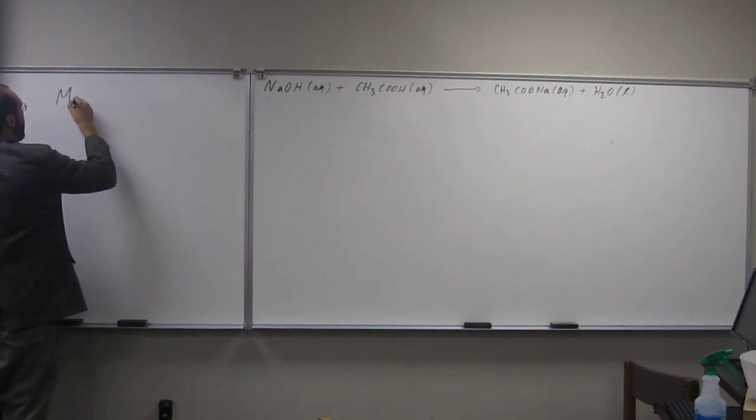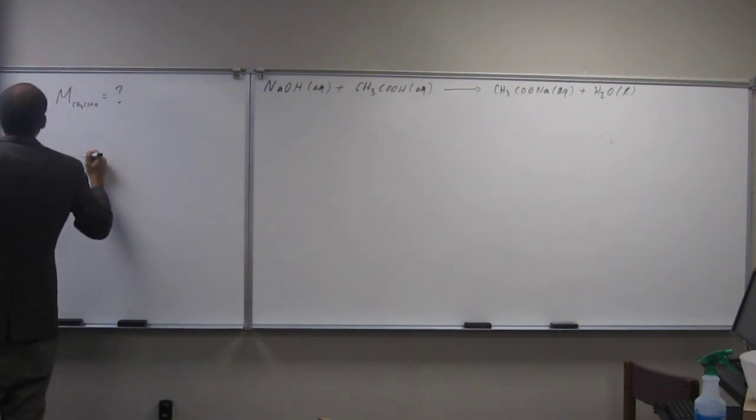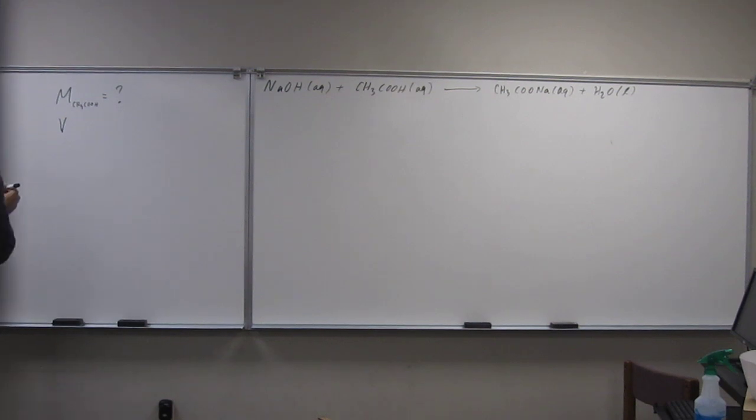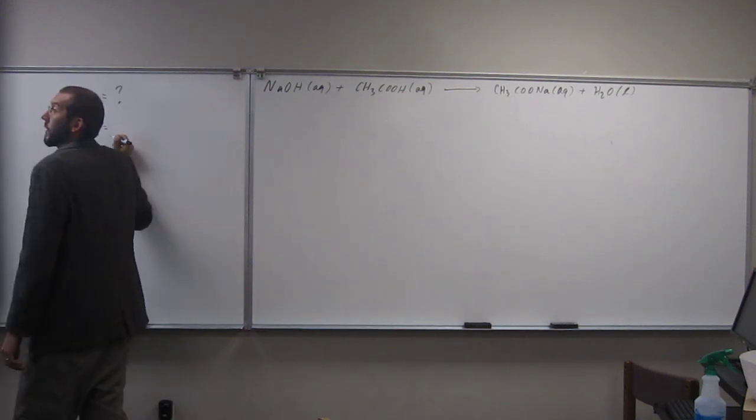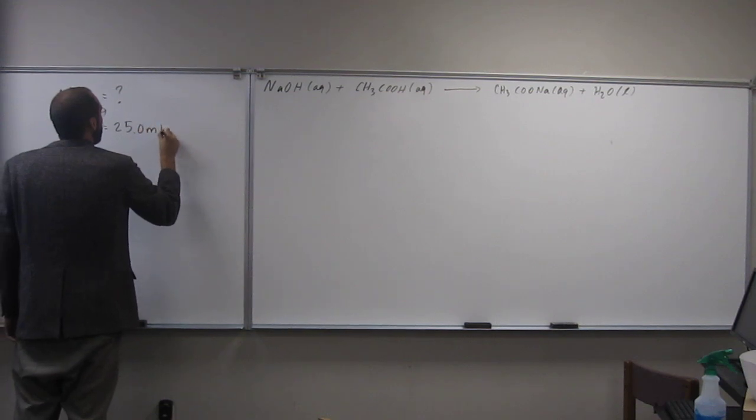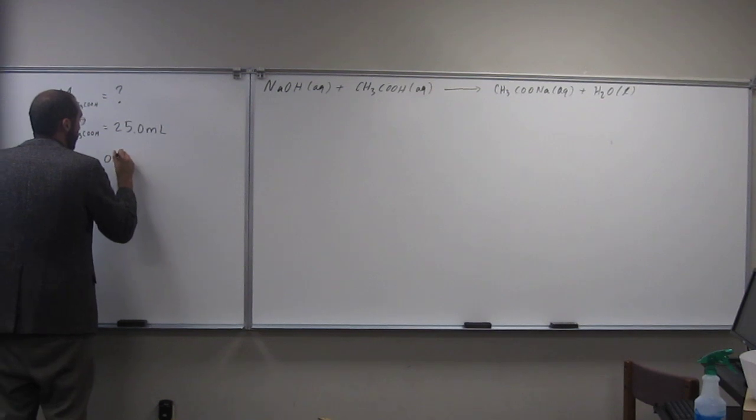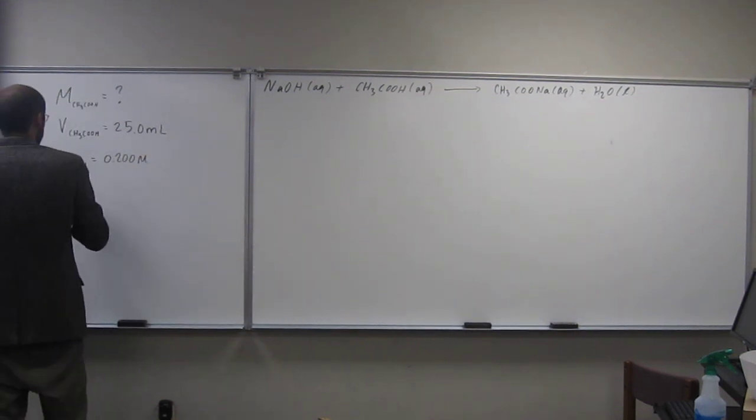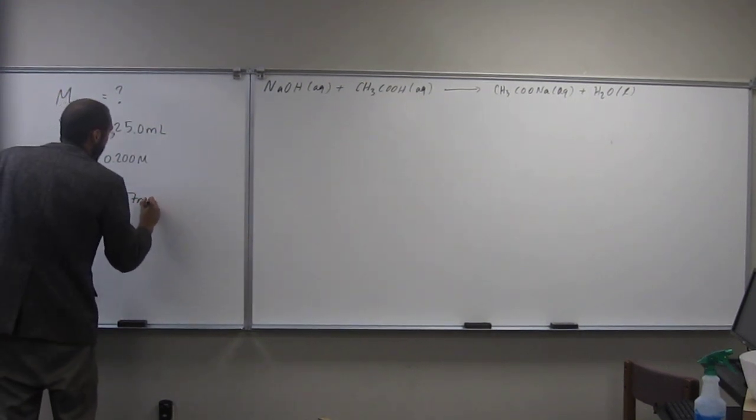So we're looking for the molarity of CH3COOH. We know the volume of acetic acid that was titrated is 25.0 milliliters. We also know the molarity of NaOH, which is 0.200 molar, and we know the volume that was used to titrate the 25 milliliters is 94.7 milliliters.